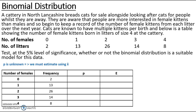If p is unknown we can estimate using x̄, the sample mean. Inputting x values 0, 1, 2, 3, 4 and frequencies 2, 13, 26, 14, 8 into the calculator gives x̄ = 2.206, meaning on average there are 2.206 females per litter. Since the mean equals np for a binomial distribution, rearranging gives p ≈ 0.5516. This is an estimation based on the mean assuming the binomial distribution is correct. Therefore we use B(4, 0.5516) as our model.